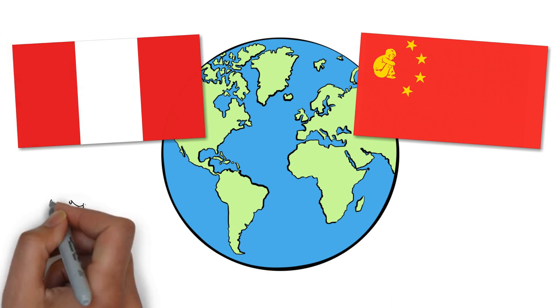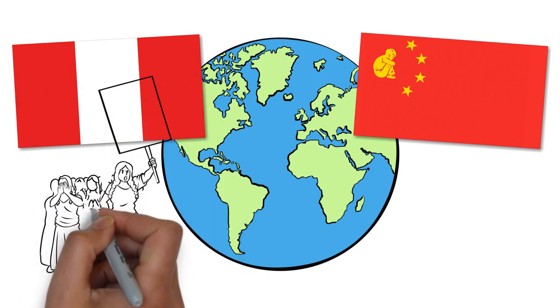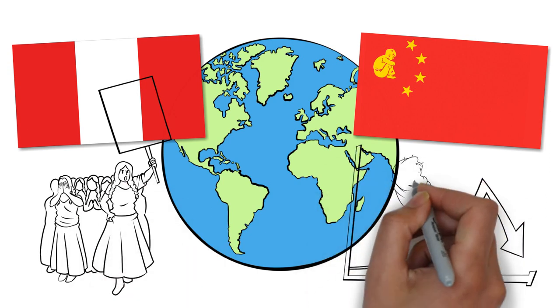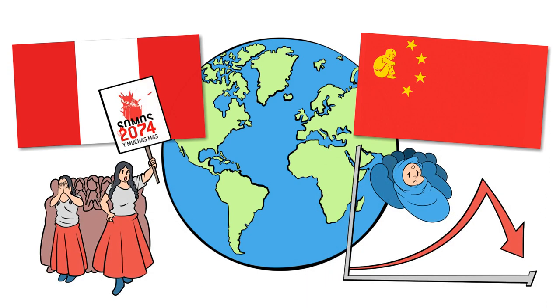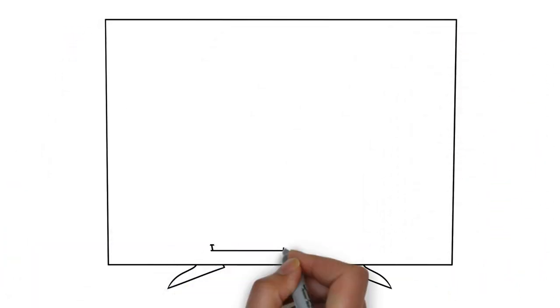Less known is that the Peruvian government used U.S. foreign aid money to sterilize indigenous women involuntarily. Other population control policies were implemented around the world.